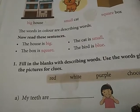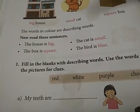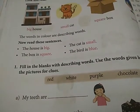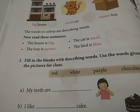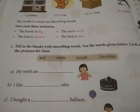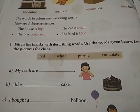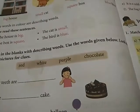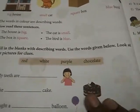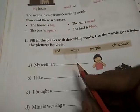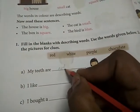Now read these sentences. The house is big. The cat is small. The box is square. The bird is blue. Fill in the blanks with describing words. Aap ko describing words fill karni hain. Use the words given below. Look at the picture for clues. Clues ke liye aap picture dekh sakti hain. My teeth are — everyone knows teeth kaisi hoti hain — white.